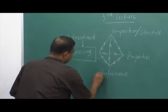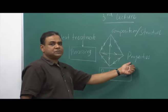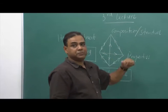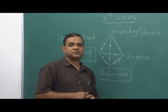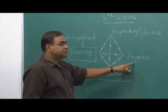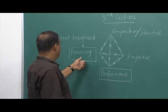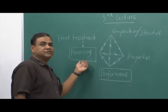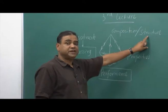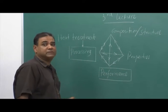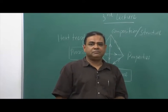The final aim is definitely performance. To get performance we need to look at properties, and to get properties we need to look at composition and structure — which could be microstructure, crystal structure, or even macrostructure. We can also change the processing condition on the same material, and when we change processing we can have a change in structure, correspondingly a change in properties, and finally different performance. In this processing we have heat treatment, which is nothing but a temperature-time situation.